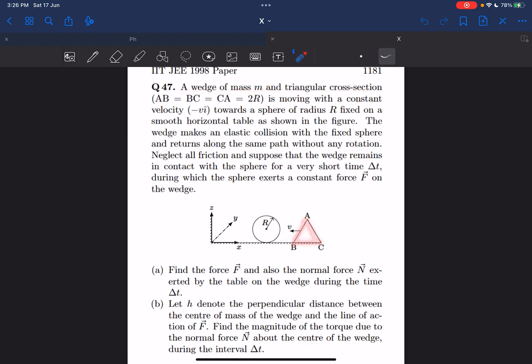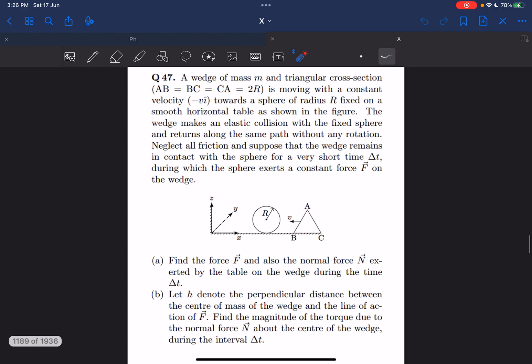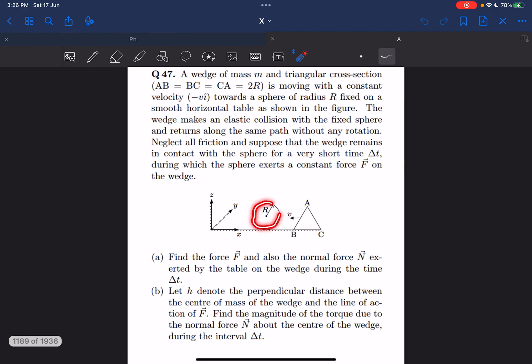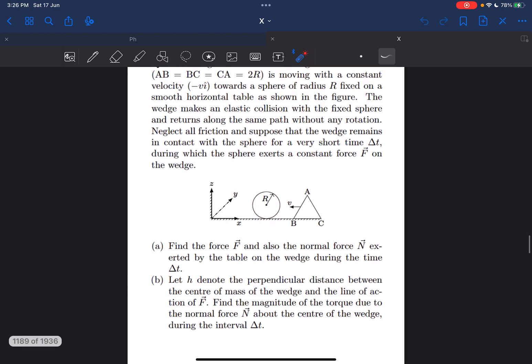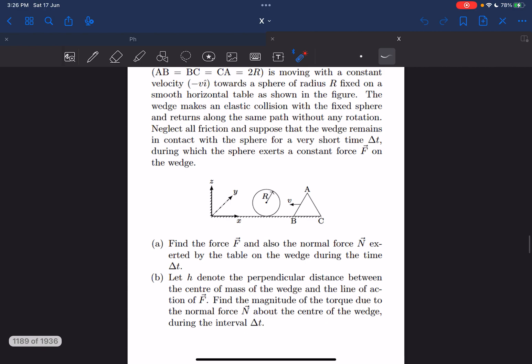It's moving towards the left with a velocity v which is constant towards a sphere whose radius is r and it is fixed to the ground. So the sphere is fixed and the table is smooth so there is no friction involved in this case.